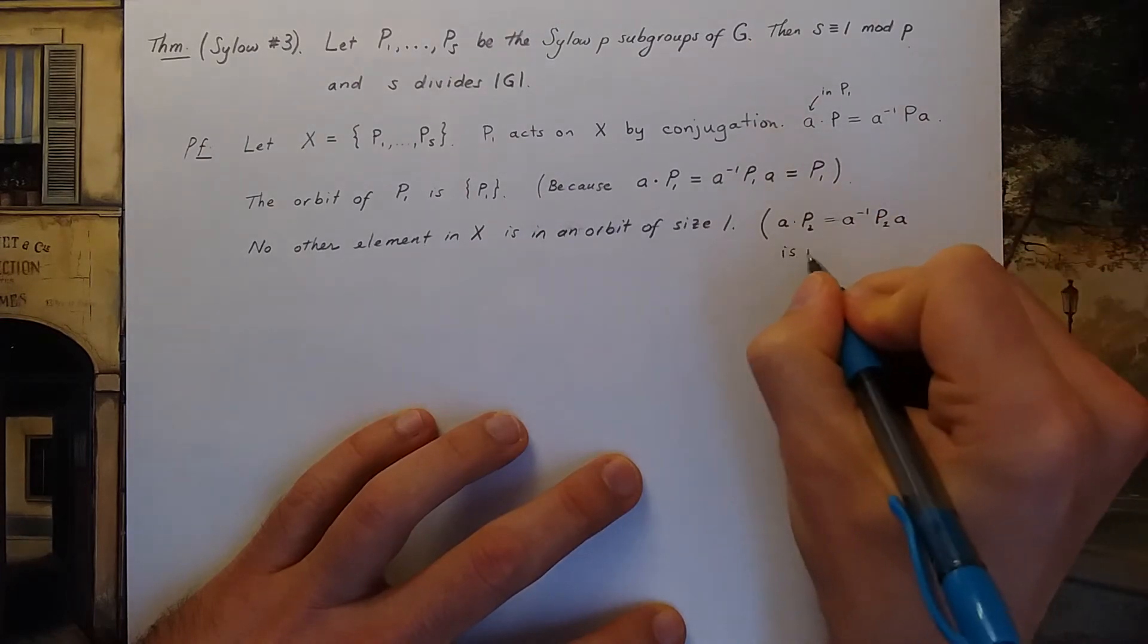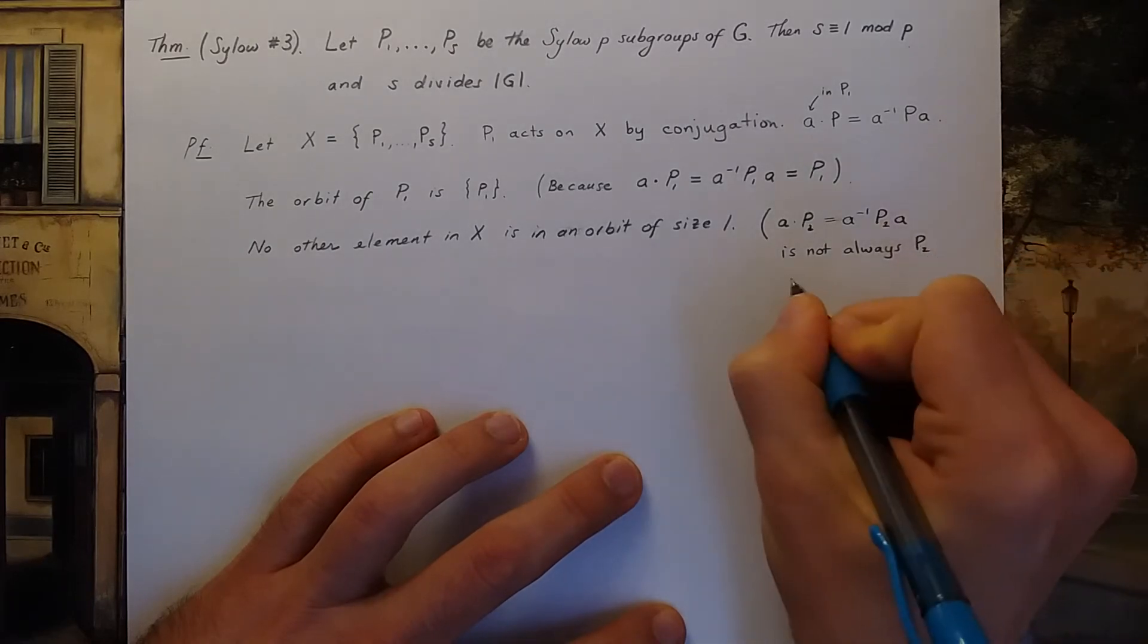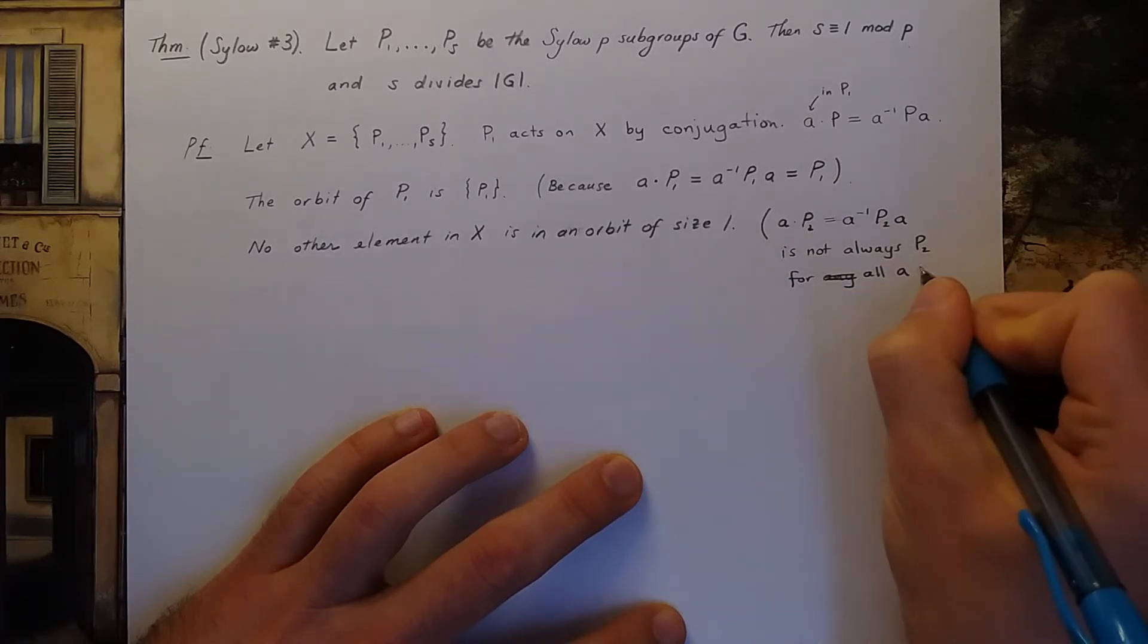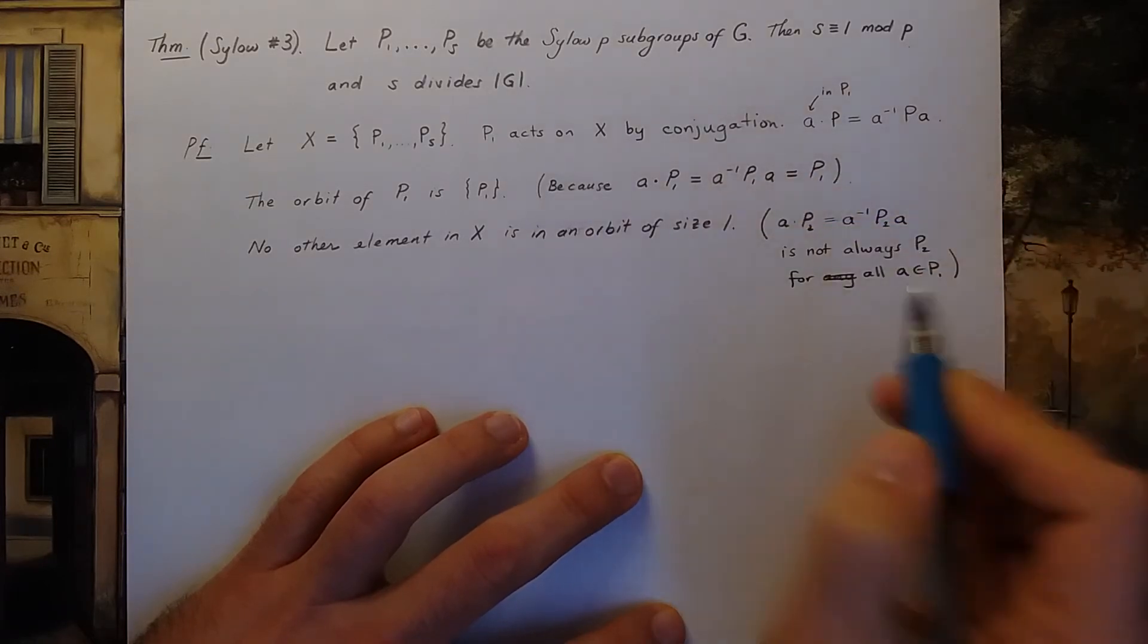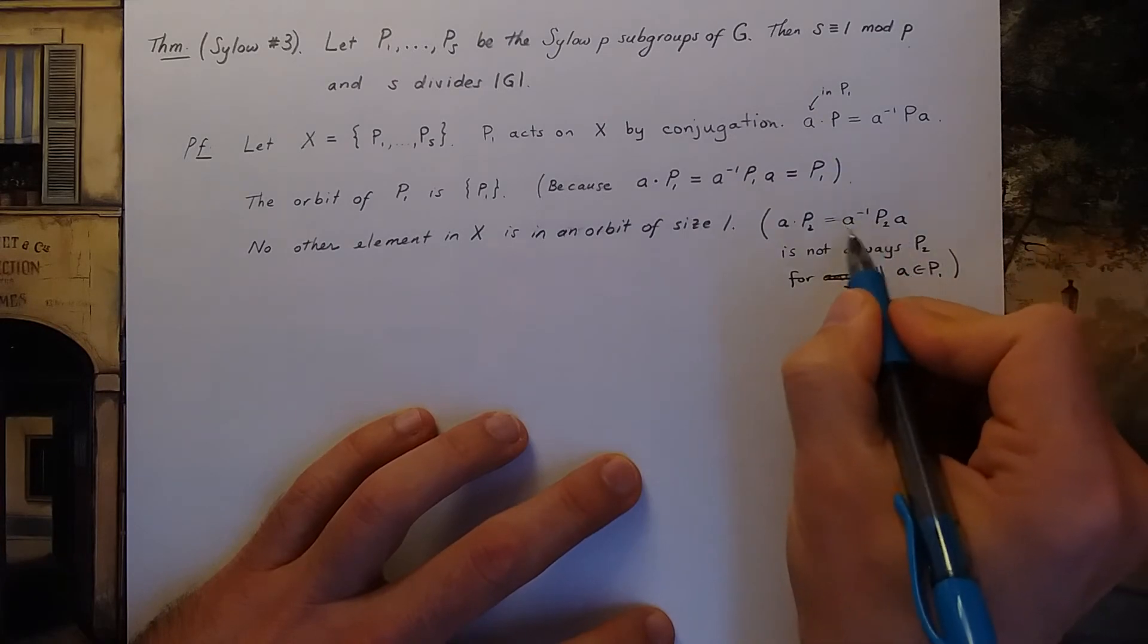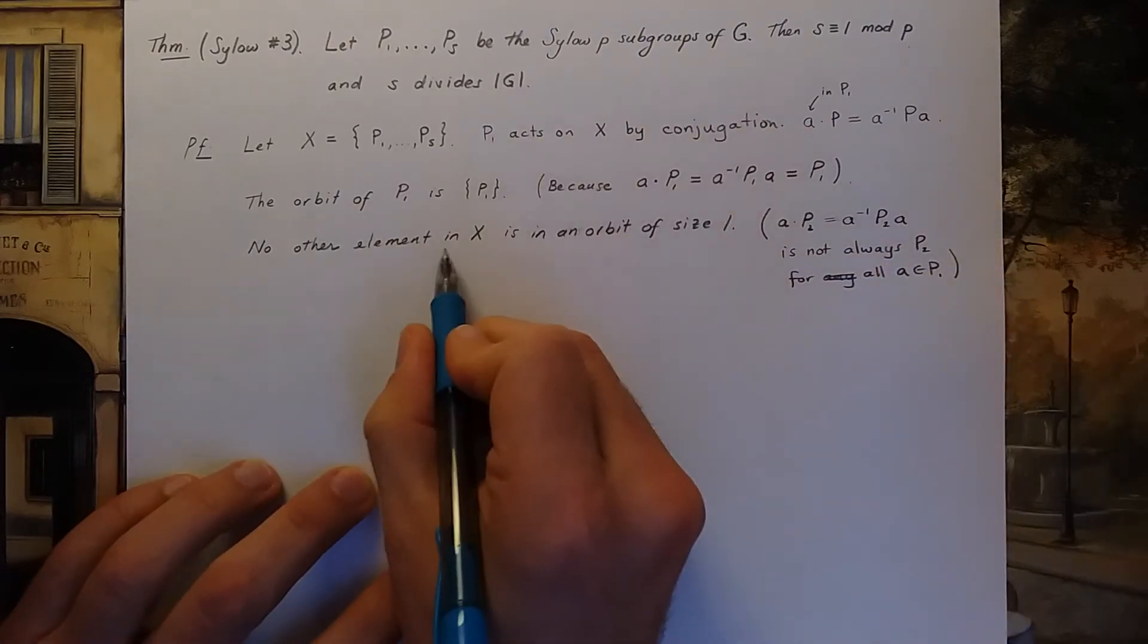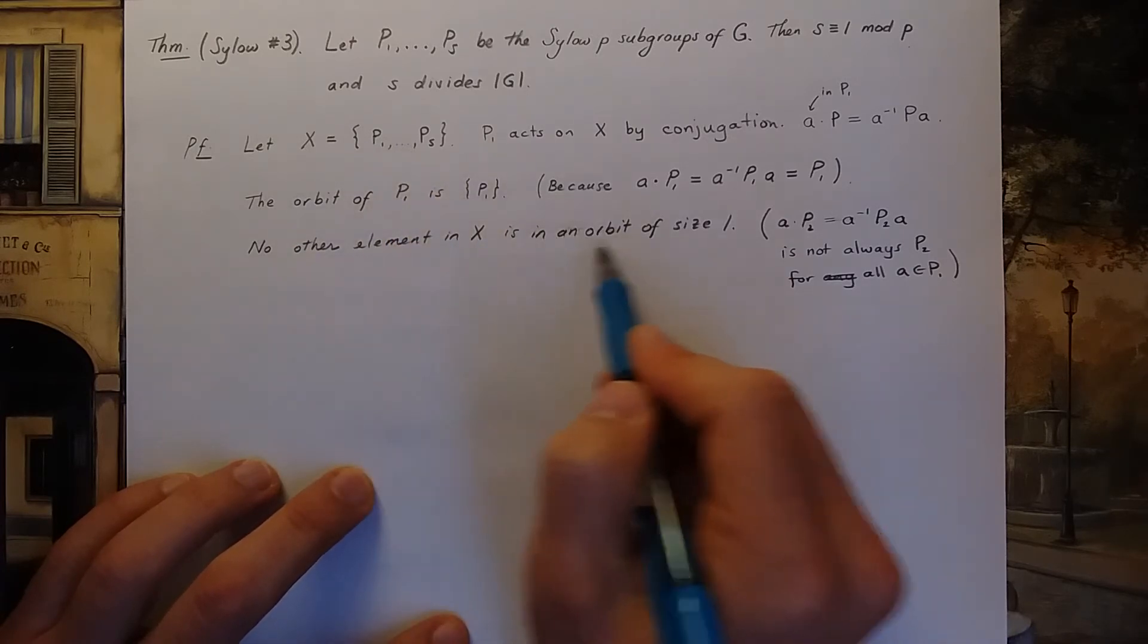So this is not always P₂ for all elements a in P₁. Because you're taking element a in P₁, something in P₁ times something in P₂ will not always land back in P₂. So no other element in the set X is in an orbit of size 1.